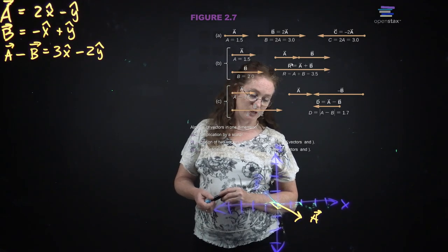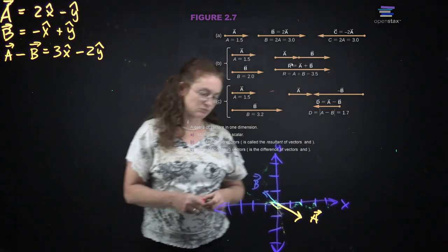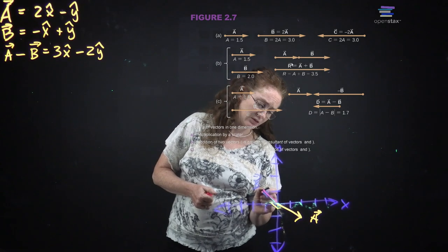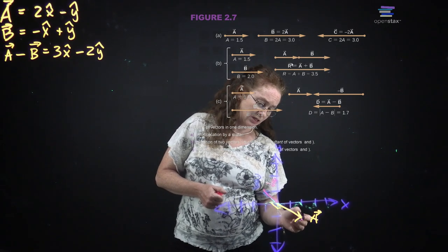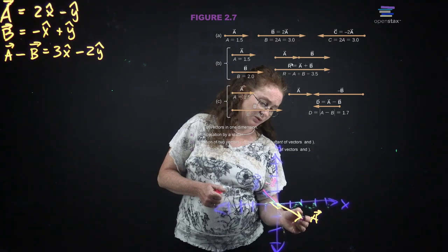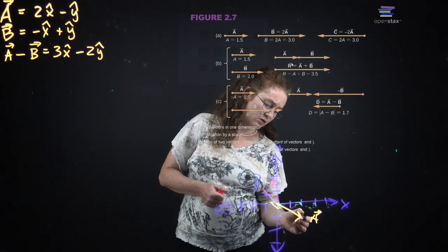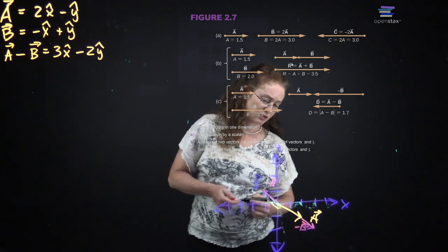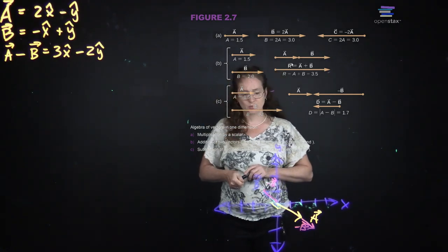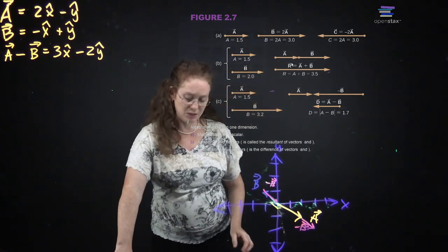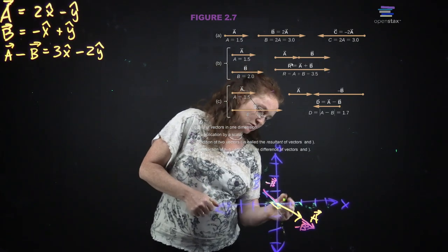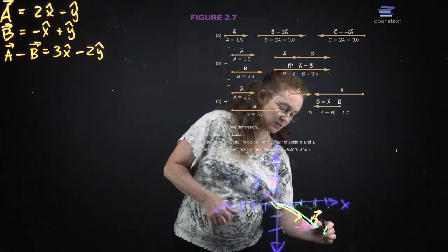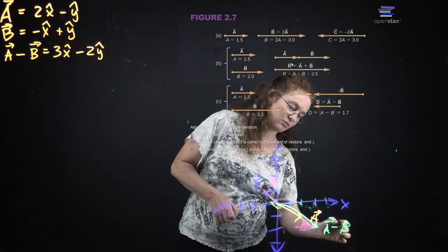If we want to draw what it looks like, I prefer to draw negative B first. This is negative B, and then we move negative B over. A minus B is the same thing as A plus negative B, so our resultant vector is A minus B.